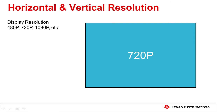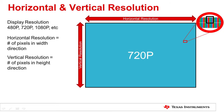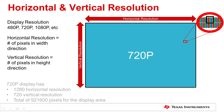In general, display panels consist of many individual pixels. Horizontal resolution refers to the number of pixels in the display's width direction, and vertical resolution refers to the number of pixels in the display's height direction. A 720p display, for example, will have 1280 horizontal resolution and 720 vertical resolution, totaling 921,600 pixels for the display area.